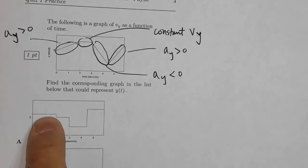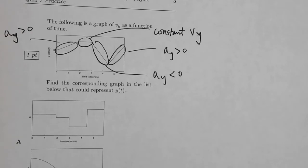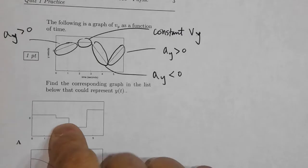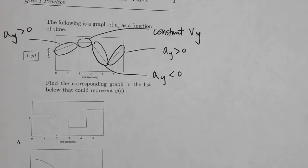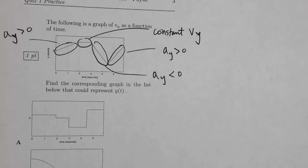Some wrong answers show the position jumping discontinuously — that would be teleportation, which is not physical. If you confused this with the acceleration graph, you'd get a graph showing a positive value, then zero, then negative, then positive — that's the derivative of velocity, not position. On a multiple-choice test, you can get the right answer by eliminating the wrong ones.